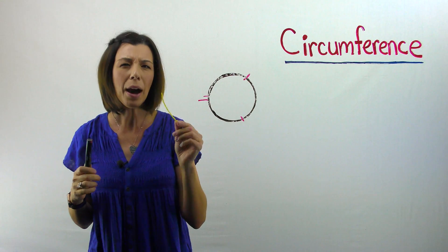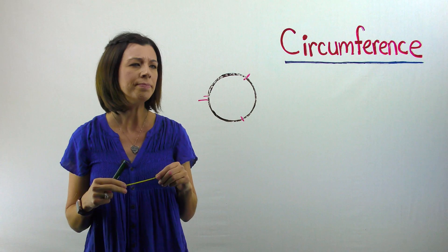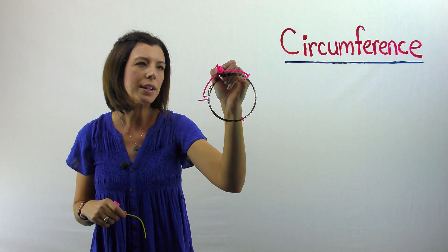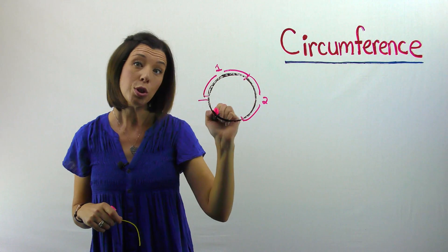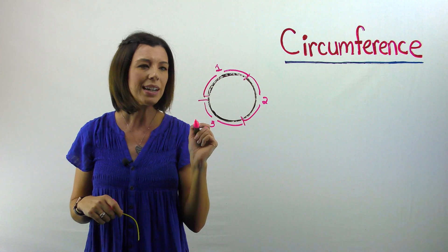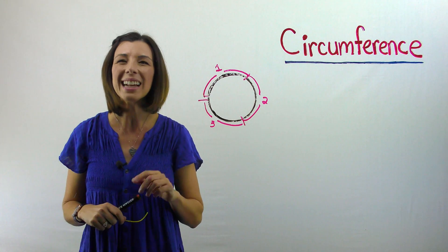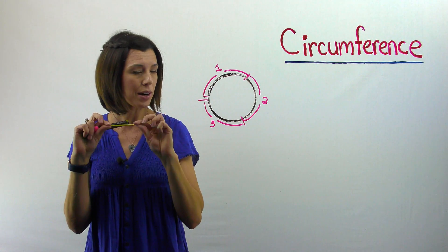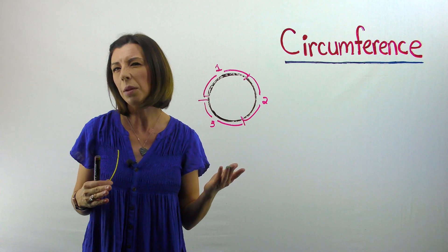So I want you to think about how many times did your wiki stick go around the circle? Well, I see that from here to here was one time. From here to here was two times. And from here to here was three times. But then I noticed that it looks like there was just a little bit more that it didn't connect. So could we say that your diameter goes around your circle three times and a little bit more?